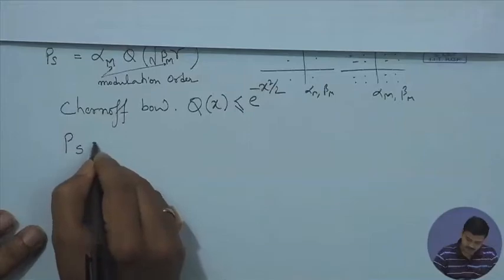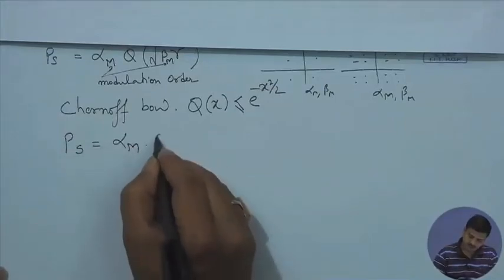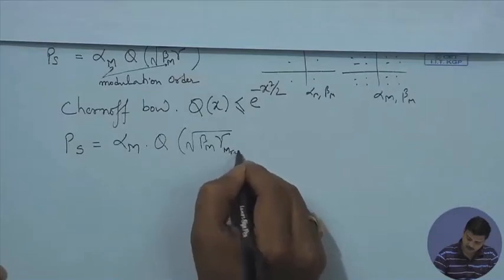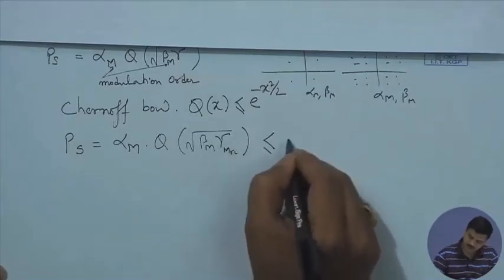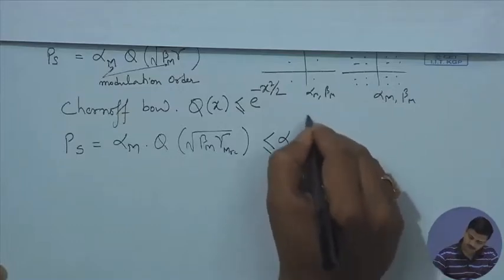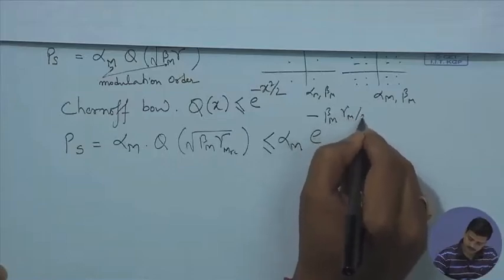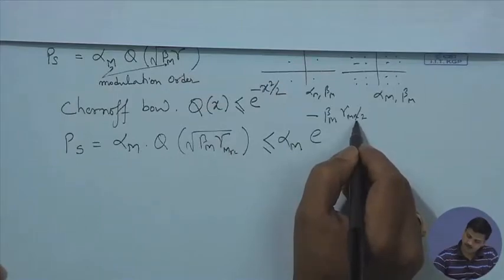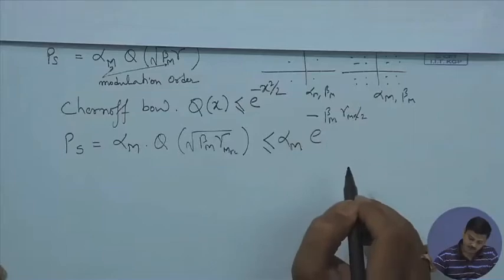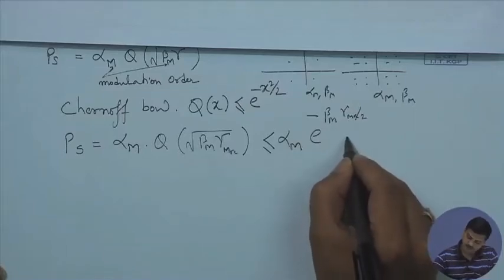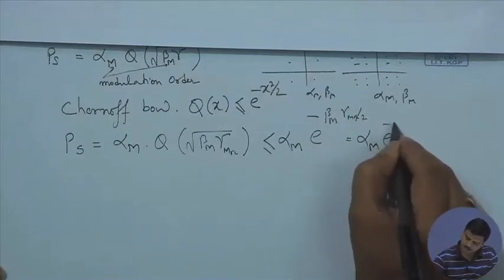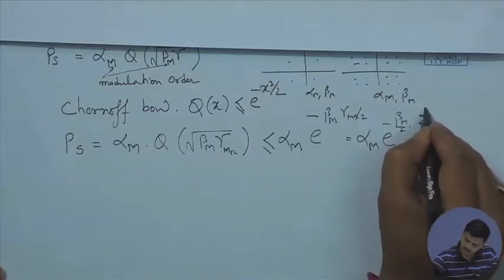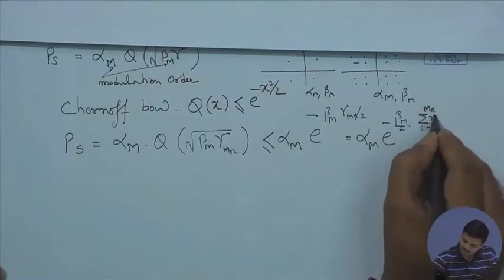Using the Chernoff bound, P_s = alpha_m × Q(√(beta_m × gamma_MRC)) ≤ alpha_m × e^(−beta_m × gamma_MRC / 2). Since gamma_MRC equals the sum over i from 1 to MR of gamma_i, this becomes alpha_m × e^(−(beta_m/2) × sum_{i=1}^{MR} gamma_i).